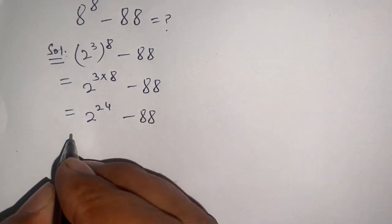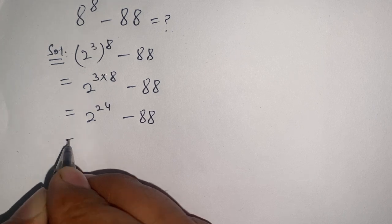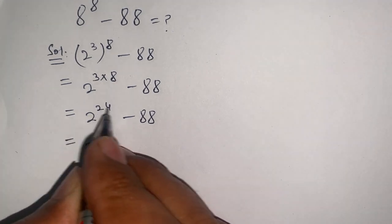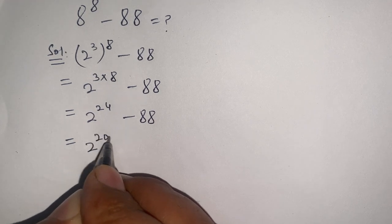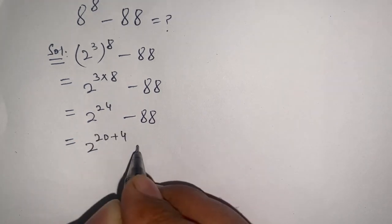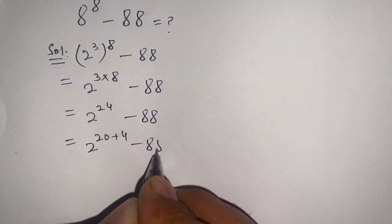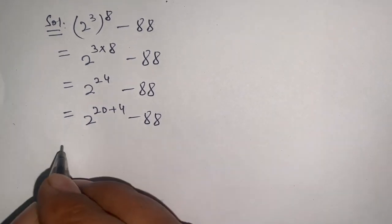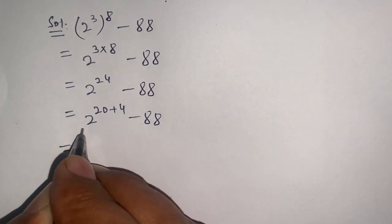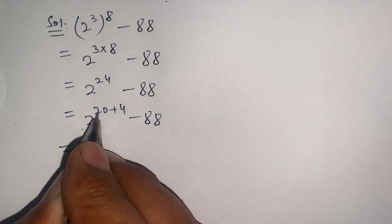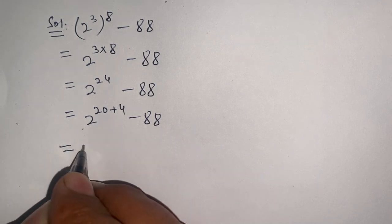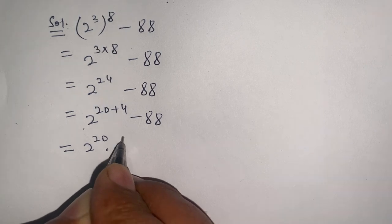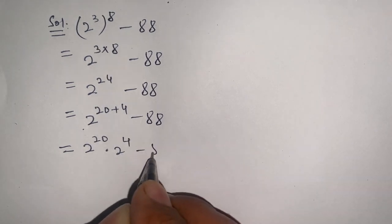Now let us solve this as 2 power 24. We can write 24 as 20 plus 4 minus 88. In the next step, we can break down this as 2 power (20 plus 4), which we can write as 2 power 20 times 2 power 4 minus 88.